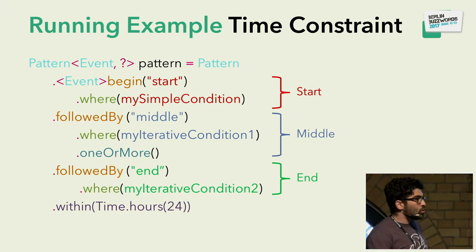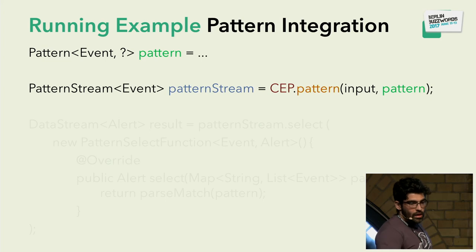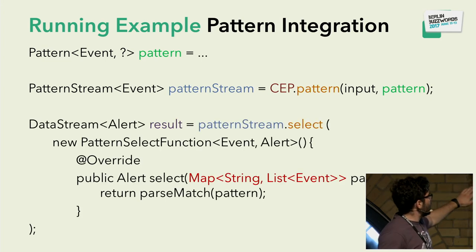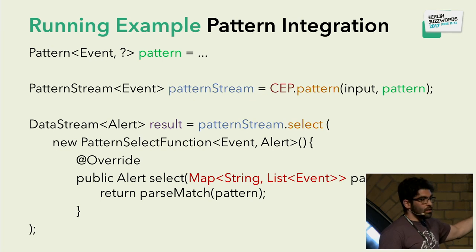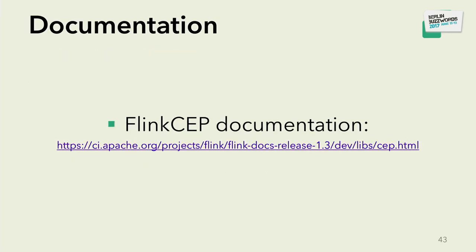To integrate this into your Flink job, you call 'CEP.pattern' with your input stream — which can be keyed or not keyed depending on your use case — and your pattern. This returns a PatternStream on which you call 'patternStream.select', specifying a function that takes the matched events and transforms them meaningfully, for example raising an alert. The match format is a map from the individual pattern name (String) to the list of accepted events for that pattern — which is why each individual pattern name must be unique.